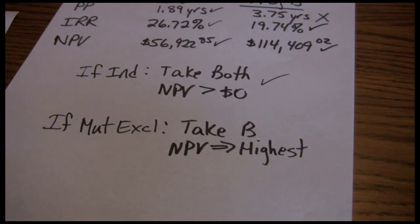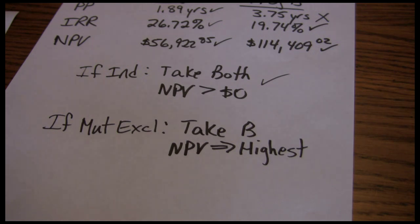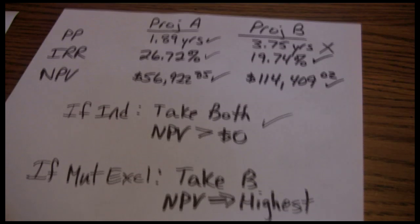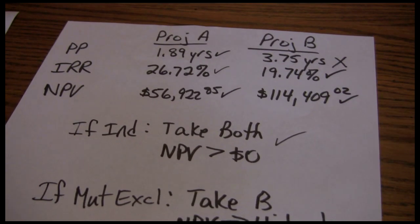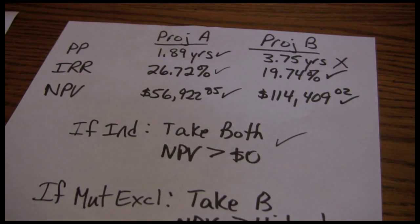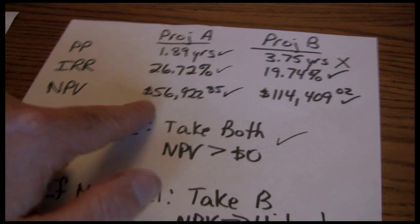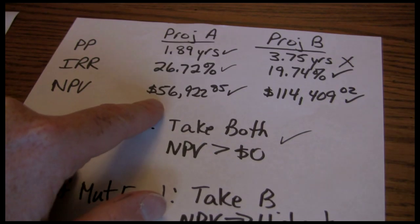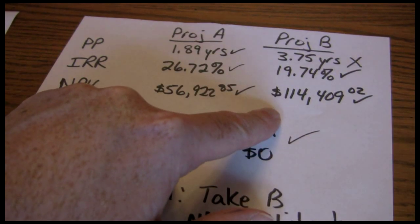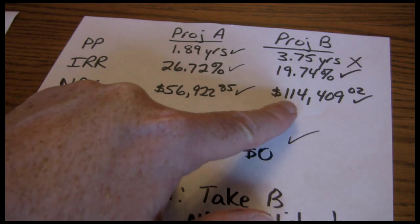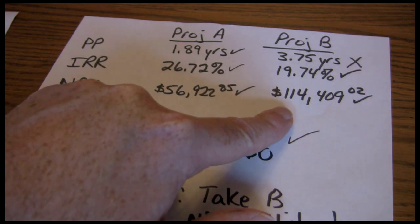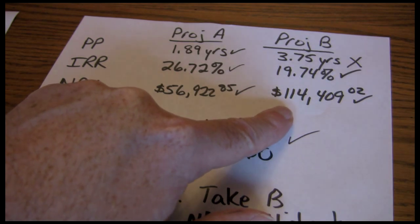One way to think about this is our primary objective is to maximize firm value. Project B adds about twice as much to our overall value as Project A. If you take Project A, that means you can't take Project B — you're taking $56,000 and throwing away $114,000. If you can only take one, we'd much rather take the one worth $114,000.